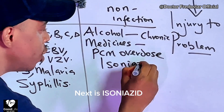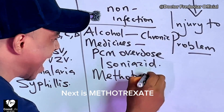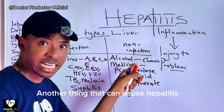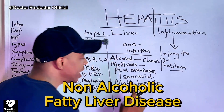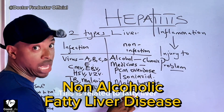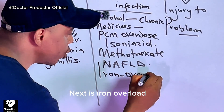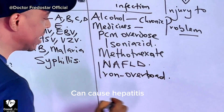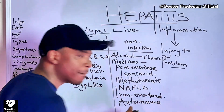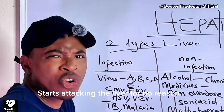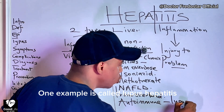Another one is isoniazid, another one is methotrexate, and many other medicines. Another thing that can cause hepatitis where it is not infection: non-alcoholic fatty liver disease — if fat causes hepatitis. Another one: iron overload — if it causes hepatitis. Another one: autoimmune disease — where the immune system of the person fights the person's own liver, like lupus, and many other ones.